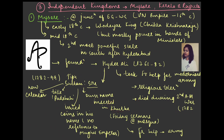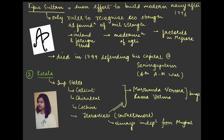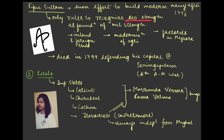Tipu Sultan got his own name inserted in the khutbah — the Friday sermons and prayers in mosques — with no role for the Mughal emperor. He also contributed to bringing out a new calendar and took French help in the modernization of the army. He was a very important ruler. He even put effort into building a modern navy after 1796 — remember this date.